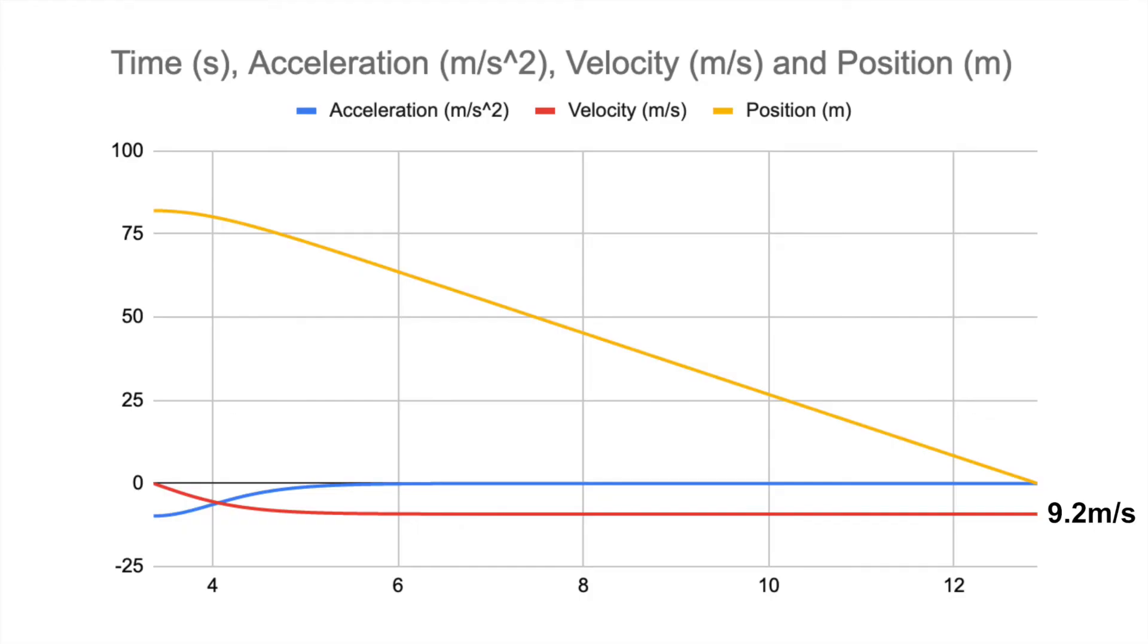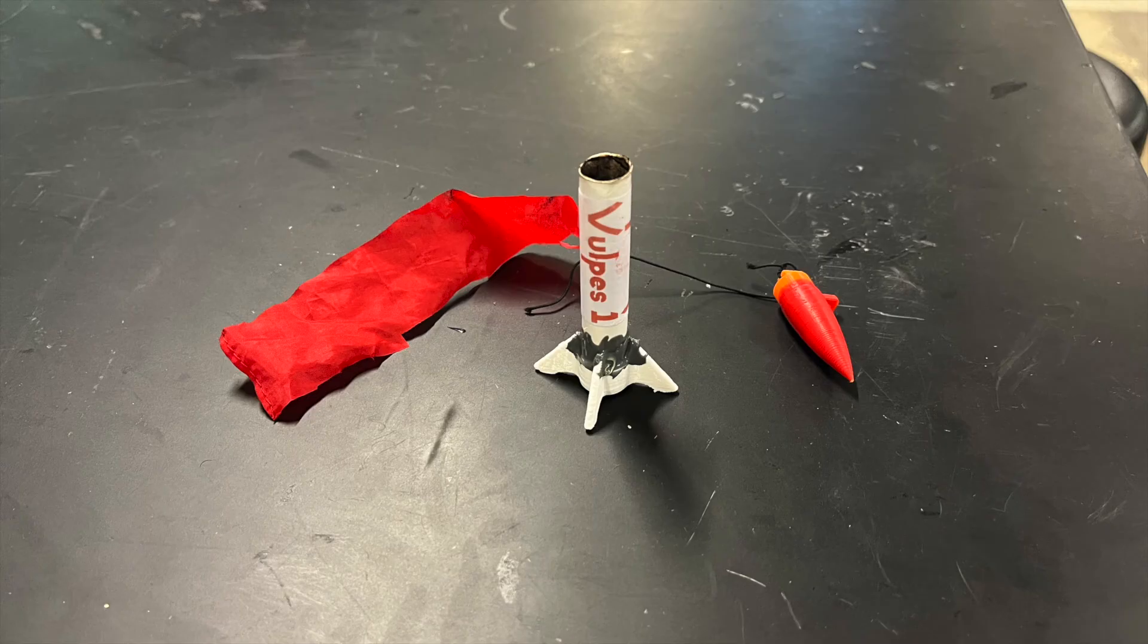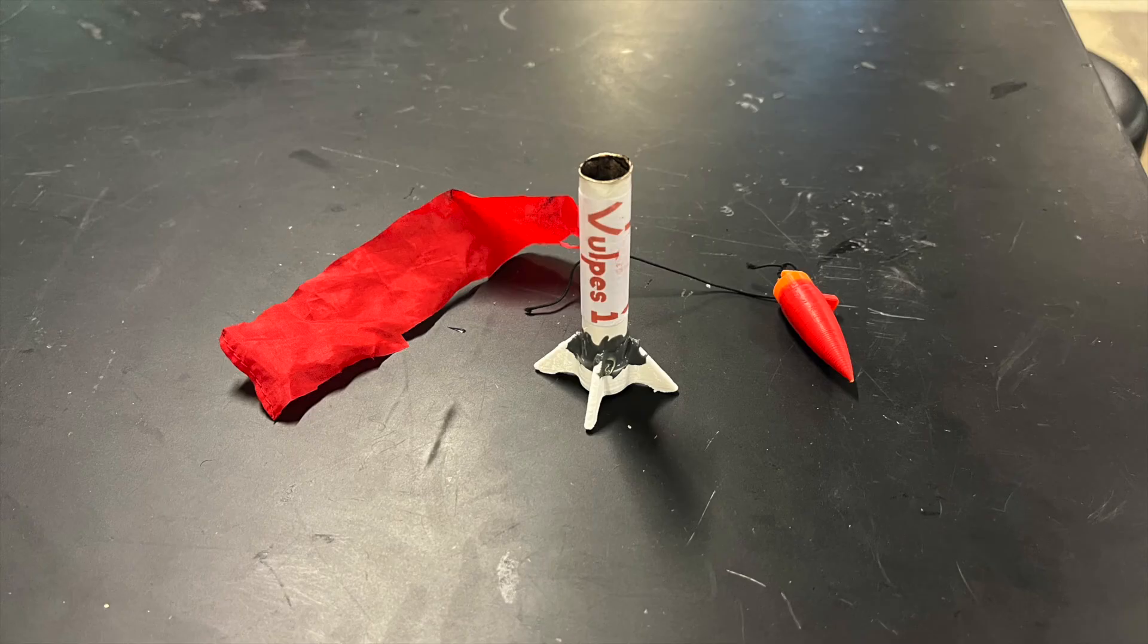Based on this estimate, the body tube hit the ground at 9.2 meters per second, or 21 miles an hour, and the nose cone hit the ground at 4.6 meters per second, or 10 miles an hour. Both gentle enough speeds to leave the two pieces of the Vulpice intact for a successful recovery.